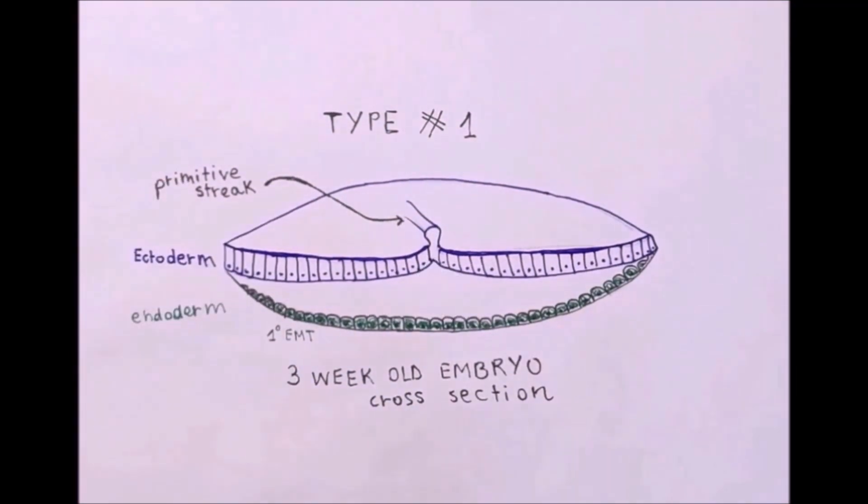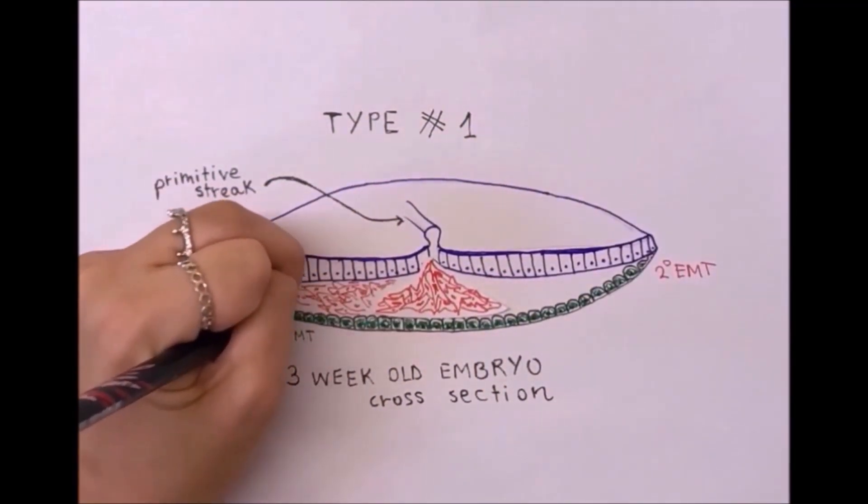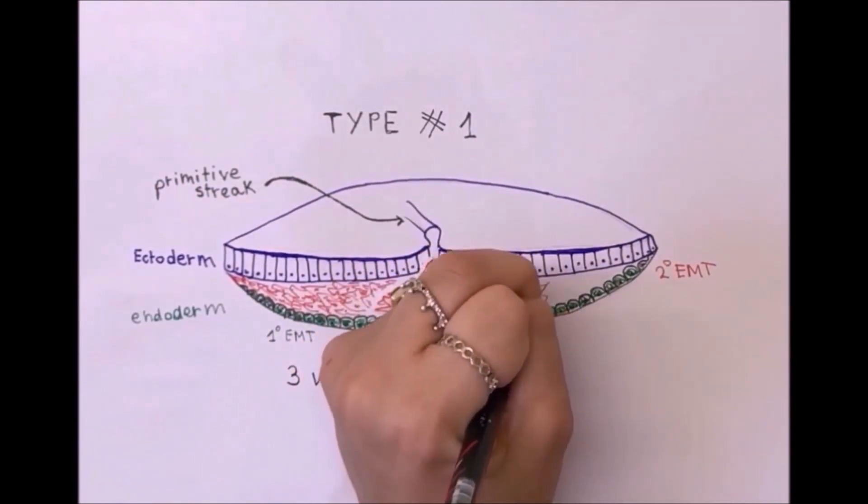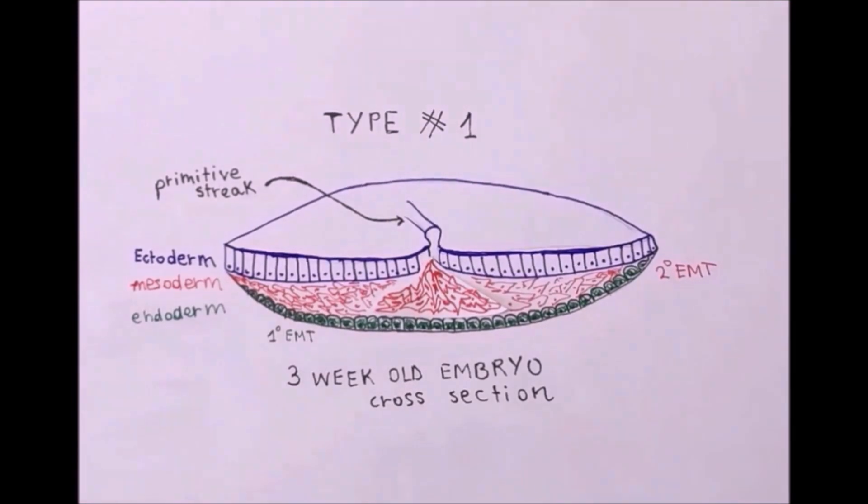Both of those processes are necessary for gastrulation, the process which converts the bilaminar embryonic disc into a trilaminar one, as well as later stages.